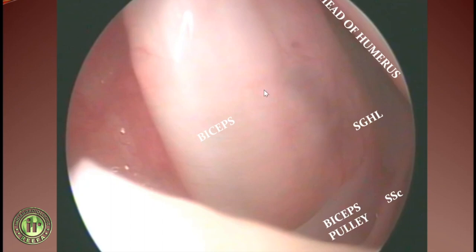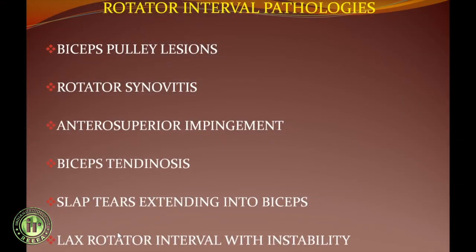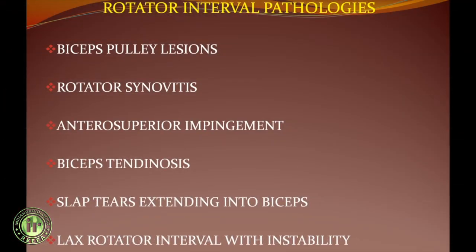An arthroscopic view shows the normal biceps tendon entering into the biceps pulley — a pristine looking biceps entering normally, with the SGHL and subscapularis visible. We will now discuss one by one: biceps pulley lesions, biceps pulley tears, rotator interval synovitis, briefly about anterosuperior impingement, a few cases of biceps tendinosis, and lax rotator interval with instability.